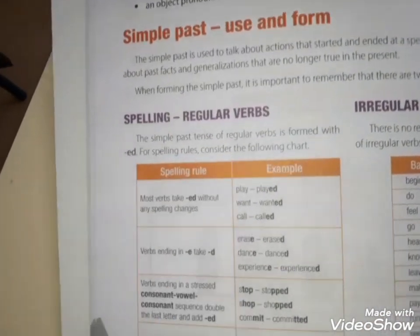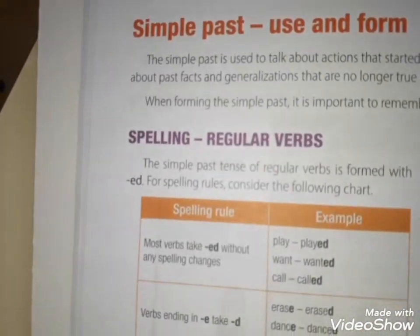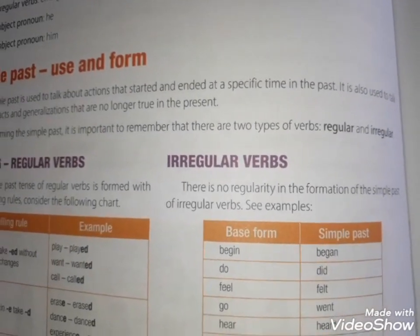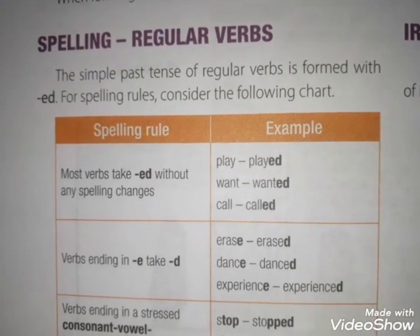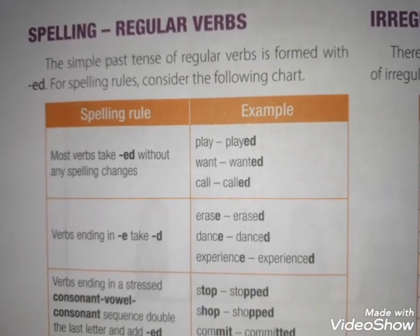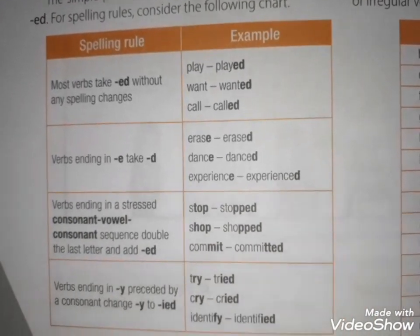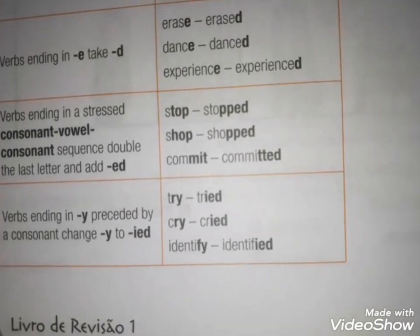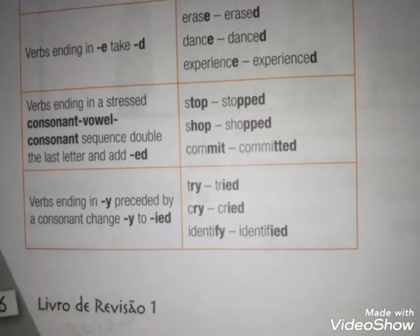Vimos que existem dois tipos de estruturas verbais: as regulares, que seguem regras, e as irregulares, que não seguem regras. A regra geral para regulares é acrescentar o ED no final de cada verbo. Exceto quando se termina em Y, que a gente elimina o Y e coloca IED, se antes do Y tiver uma consoante.